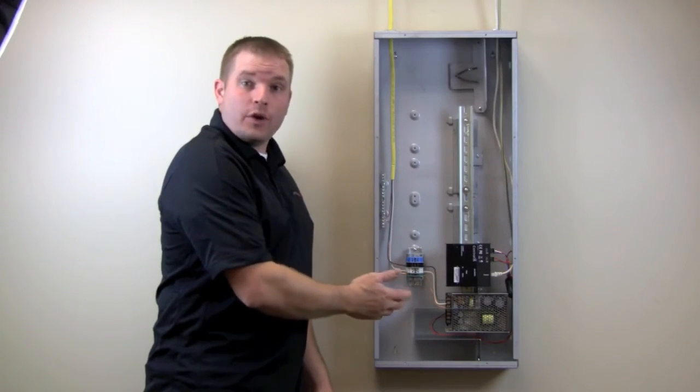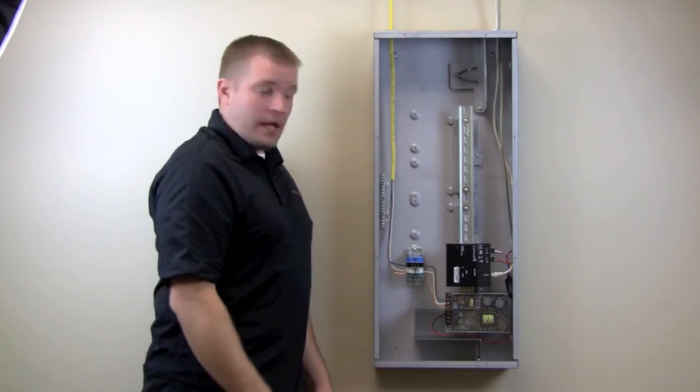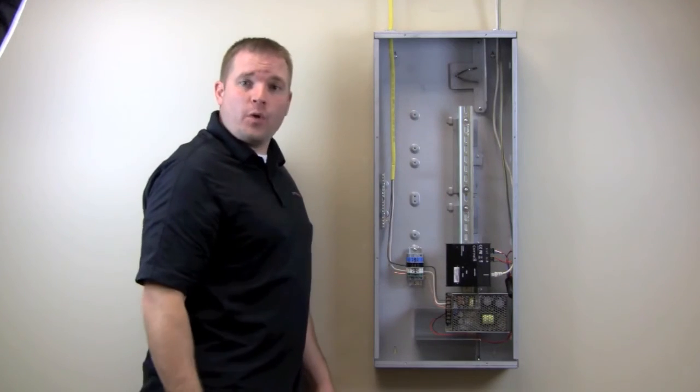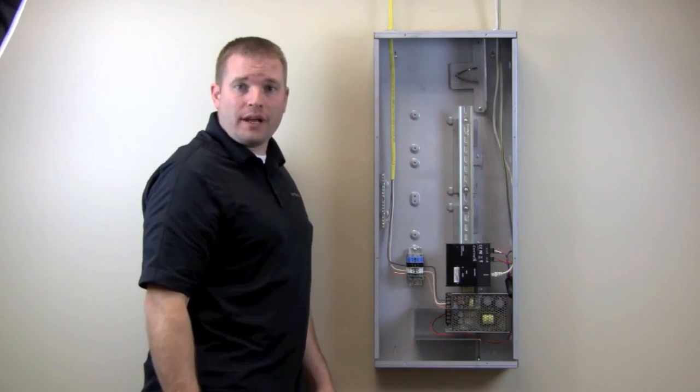Now we've got it all wired up, we can go ahead and turn on the breaker, and make sure that there's a power light on the bus ethernet gateway, and then go around and validate all our keypads to make sure that they're powered correctly.